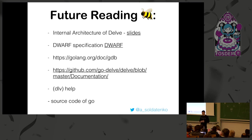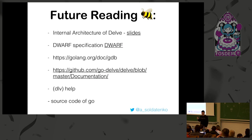For further reading - there's still not too much information out there. You can check these slides, which I think cover the architecture of Delve. You can check the DWARF specification. You can read docs on golang.org, and documentation helps. The source code of Go is one of the best sources of truth.